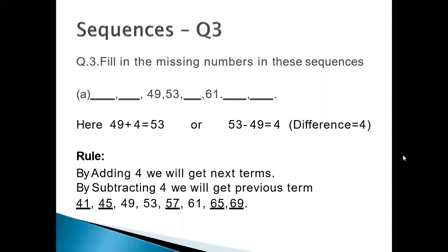The rule is: by adding 4 we get the next term, and by subtracting 4 we get the previous term. We got the number 4 from the two consecutive numbers given in the question — by observing that 49 plus 4 equals 53.